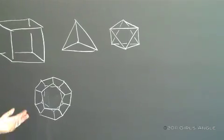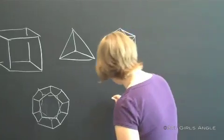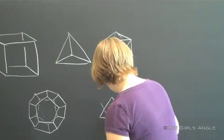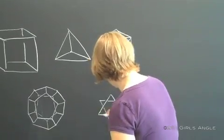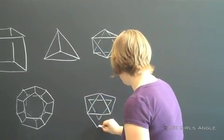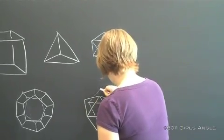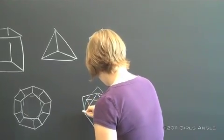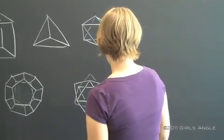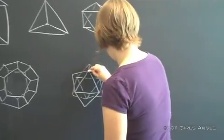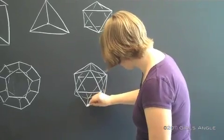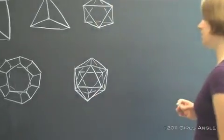And the remaining one is the icosahedron. The icosahedron has triangular faces. It has twenty of these. This is another one that will look implausible while I'm drawing it, but hopefully it should come together at the end.